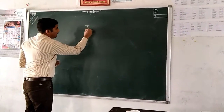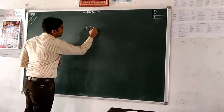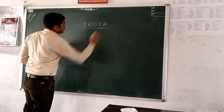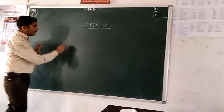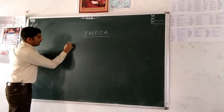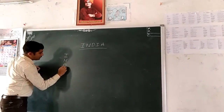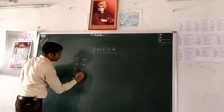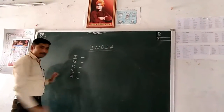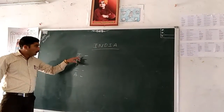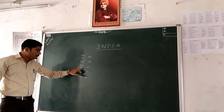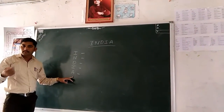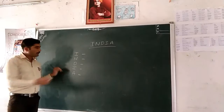I am writing here the word India. I am again writing the word India like this. Now, what is the I for? What is the N for? What is the D for? What is the second I for? And what is the A for? I will explain now.